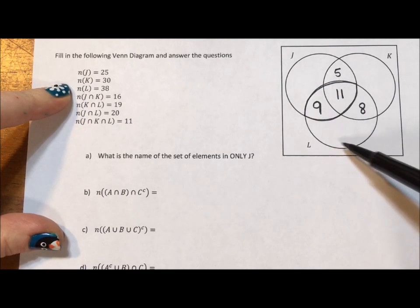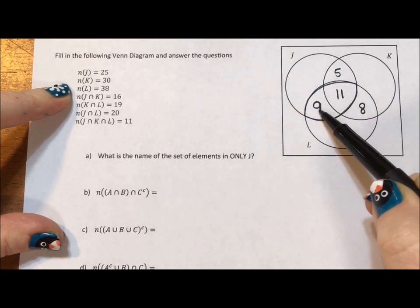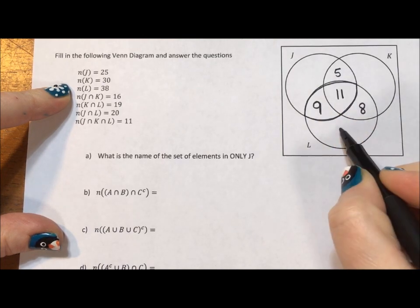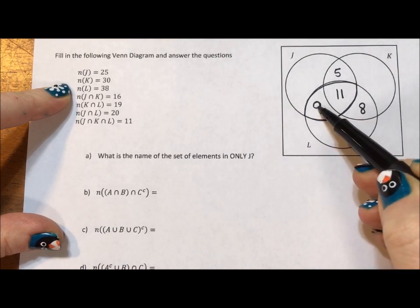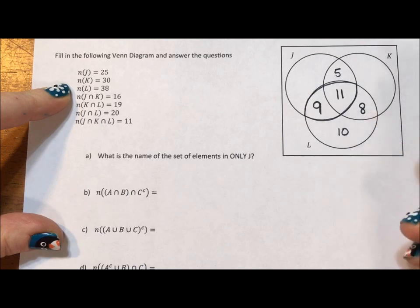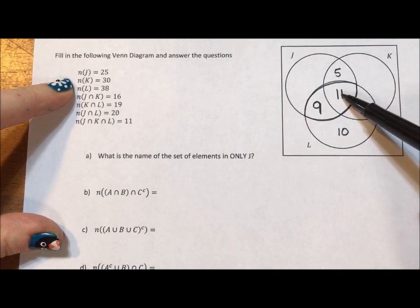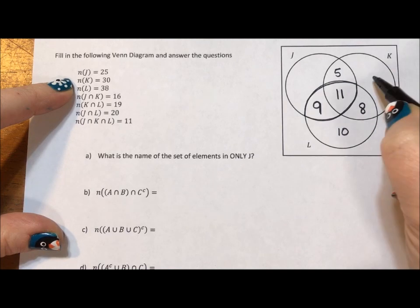Okay, L, this full circle, is 38. Well, we already have 9 plus 11 is 20, and 20 plus 8 is 28, which means there's only 10 left to go here. Okay, K has 30. Well, 11 plus 5 is 16, and 16 plus 8 is 24, so this has to be 6.